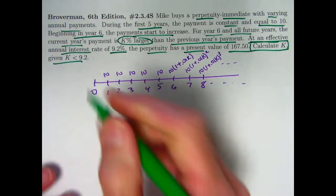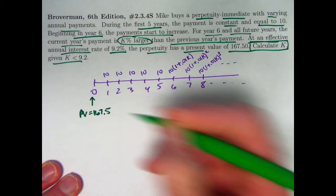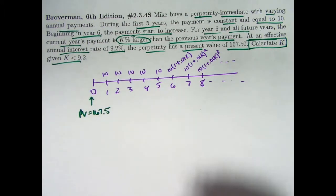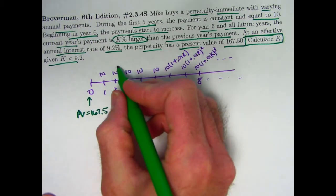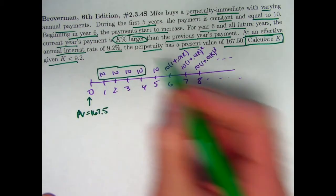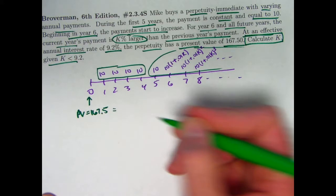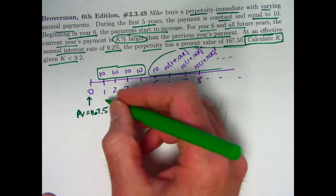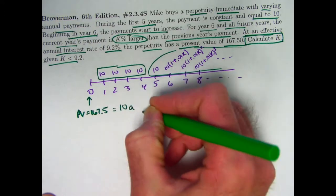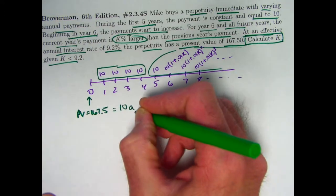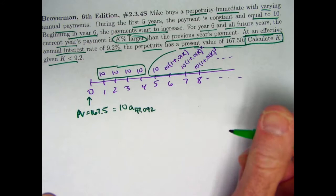The present value at time zero is what we are given. Present value is 167.5. To solve this problem, I'm going to break up the series of payments into two pieces. And there's various ways I can do that. I'm going to choose to do the first four as one chunk, and then everything else after that as the second chunk. The present value at time zero of this first sequence of four payments of ten is going to be ten times the present value of an annuity where the payments are one, with four payments and the interest rate is 0.092. It's an annuity immediate.